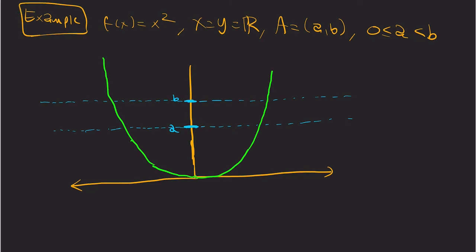So let's consider f(x) to be x squared, X equals Y equals the reals. And my set A is going to be an open interval (a,b) with the left endpoint greater than or equal to 0 because this function is never going to map below 0. You can think about what happens if A and B are both less than 0, the pre-image is the empty set.